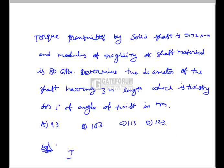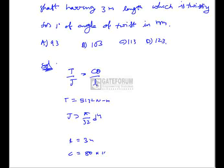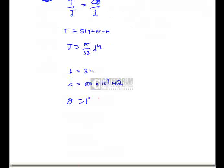From the torque equation, consider T/J = Cθ/L. Here T = 5172 Nm, J = π/32 × d⁴ (since we need to find the diameter d), length L = 3 m, C = 80 GPa = 80 × 10³ MPa, and θ = 1° = π/180 radians.